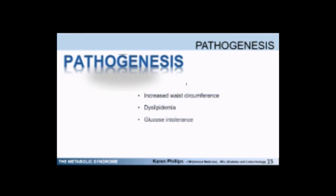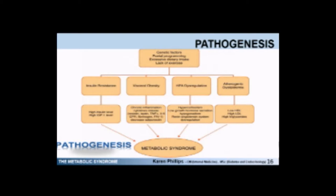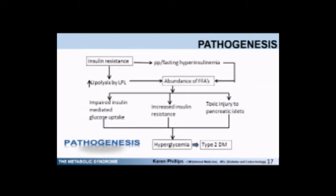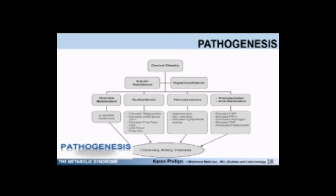The pathogenesis is not well understood. Outside of excessive dietary intake and lack of exercise, there are genetic factors and fetal programming factors which, through insulin resistance, visceral obesity, hypothalamic-pituitary axis dysfunction, and atherogenic dyslipidemia, lead to the metabolic syndrome. For type 2 diabetes specifically, through insulin resistance, increasing lipolysis with increasing free fatty acids can lead through impaired glucose uptake and toxic injury to pancreatic islets to hyperglycemia and type 2 diabetes. For coronary artery disease, central obesity can lead to insulin resistance and hyperinsulinemia, which through glucose metabolism, dyslipidemia, and pro-inflammatory changes can give rise to coronary artery disease.